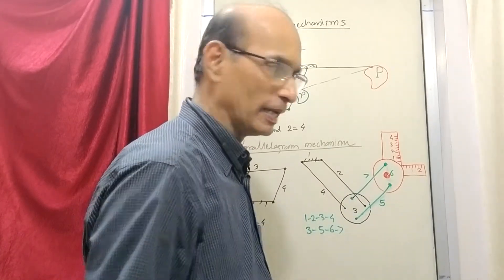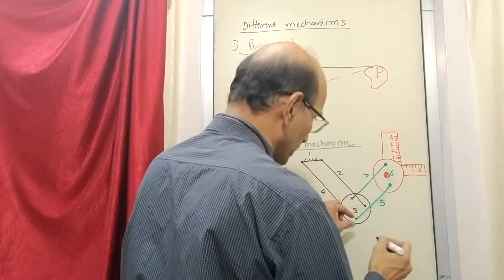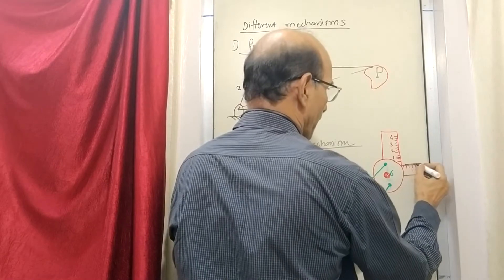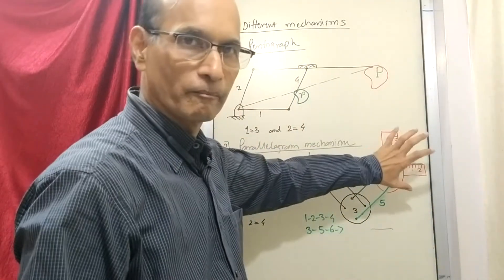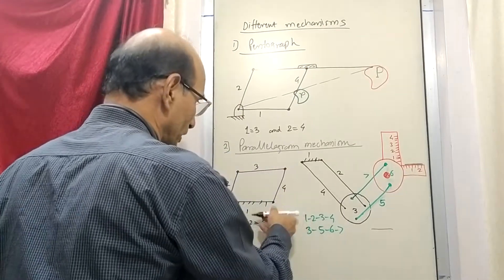That means if you want to draw a parallel line, you draw one line here. And you take it here and draw another line. So these two lines will be parallel because this does not rotate. This link number three does not rotate. It will just move like this. It will not do like this.